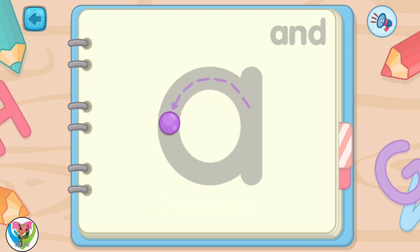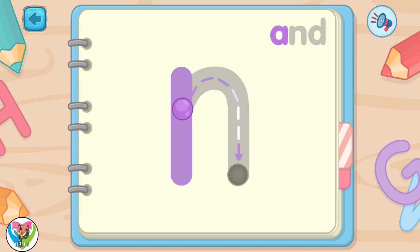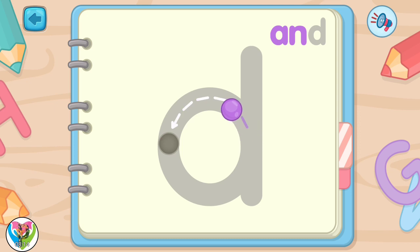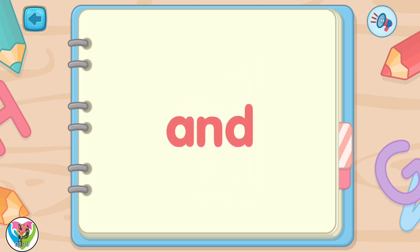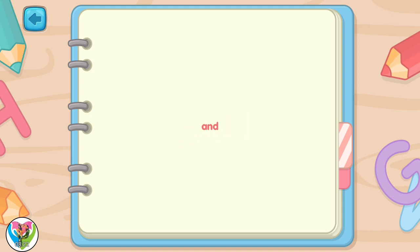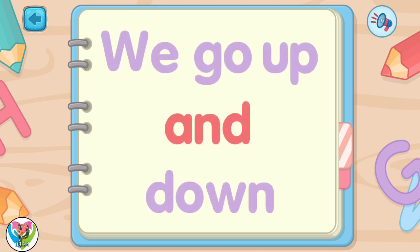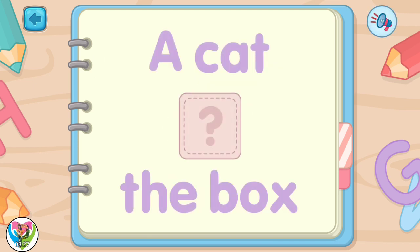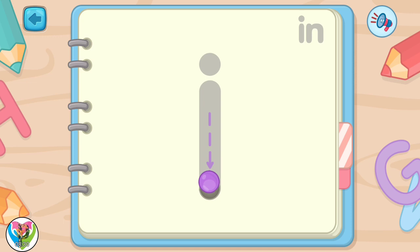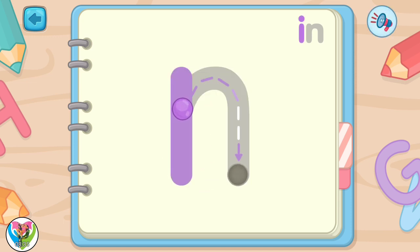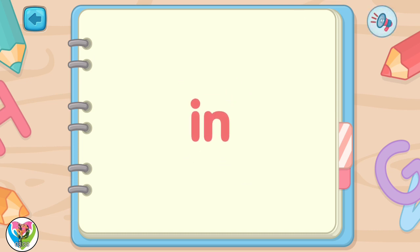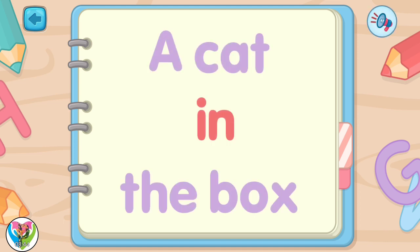Let's write another word. Move the drop to trace the letter A. Move the drop to trace the letter N. Move the drop to trace the letter D. This is how the sight word AND is written. A cat is in the box.